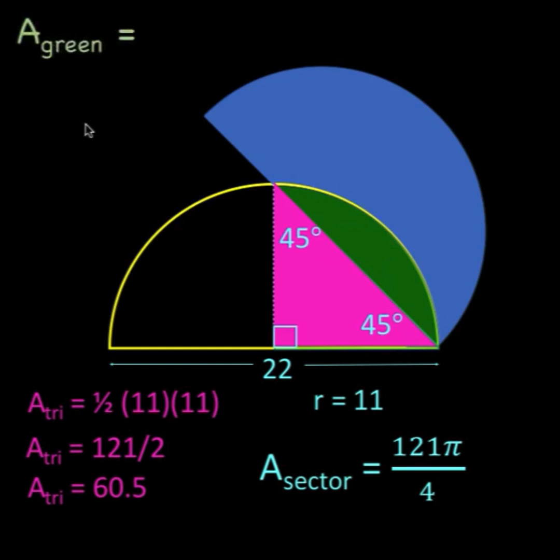So the area of the green shaded region must be the difference between this area of the sector and the area of the pink triangle.